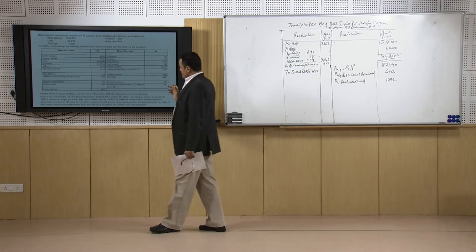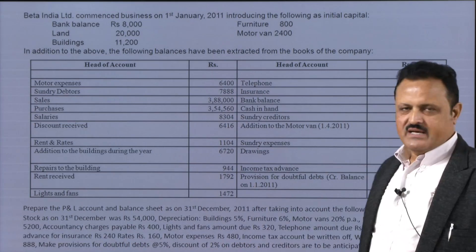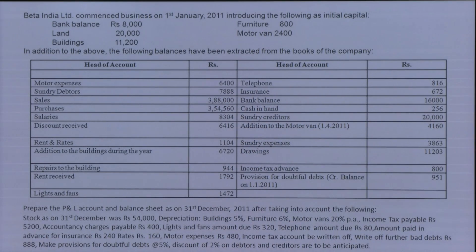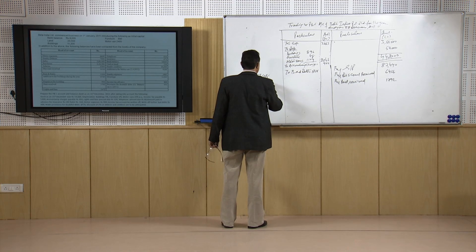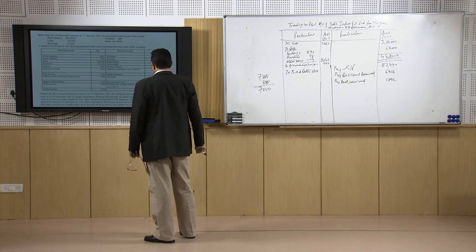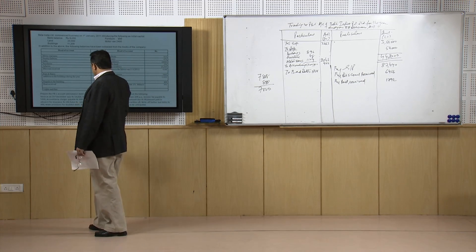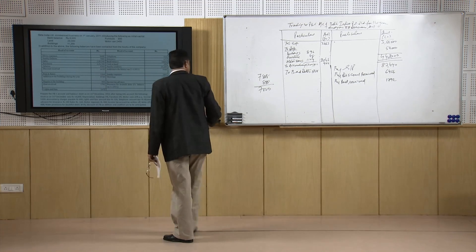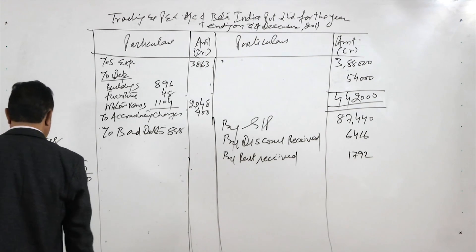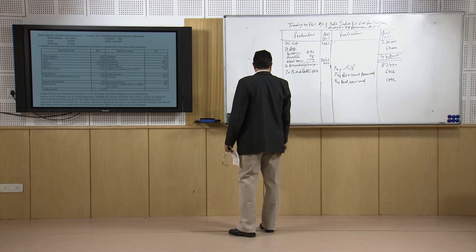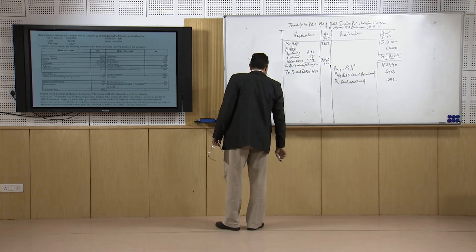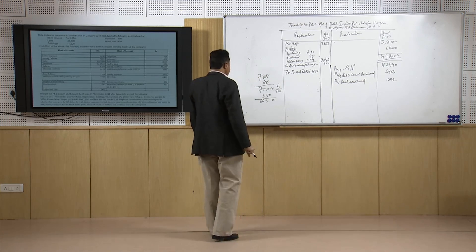Out of 7,888, the 888 has already become bad debts — those will never be recovered. So on the remaining 7,000 rupees, we make a provision for doubtful debts at 5 percent, which is 350 rupees more that may not come. After deducting the 350, we are left with 6,650 rupees as the expected recoverable credit sales.